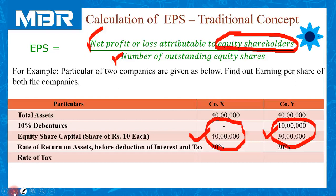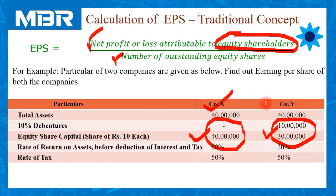The rate of tax is 50%. Now we are at the point where we need to compare the earnings capacity for equity shareholders of company X and company Y. At first glance, everything seems the same: total capital investment is 40 lakhs for both, rate of earning is 20% for both, and rate of tax is 50% for both. Let us move to the solution of the problem.